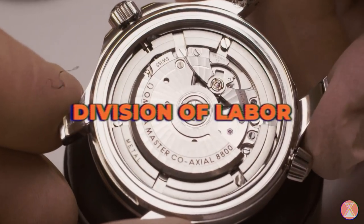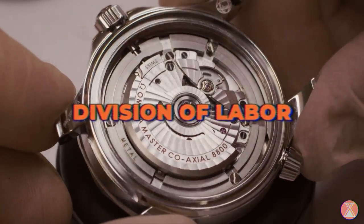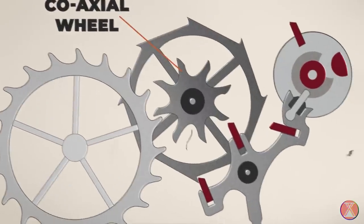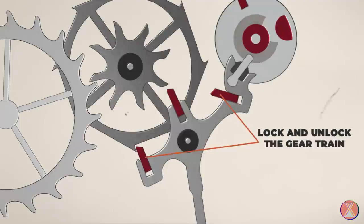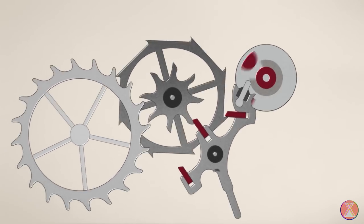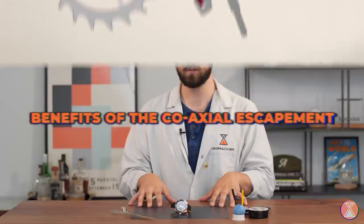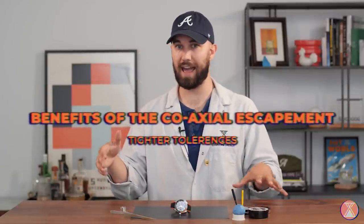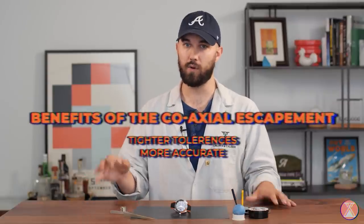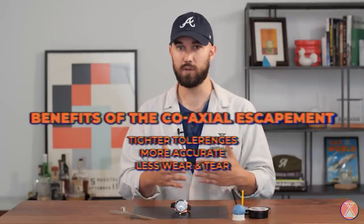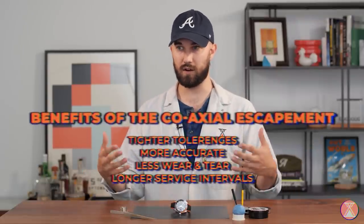So, to recap, we have the division of labor. We have your coaxial wheel. You have two corresponding pallet stones that are only involved in the locking and unlocking of the gear train. You have your two pallet stones that deliver and receive impulses to and from the balance wheel. And by specializing all of these parts, you then get tighter tolerances. Tighter tolerances lead to more accurate precision timekeeping. You also get less wear and tear. You get less sliding and rubbing between parts, which in turn leads to a longer service interval.